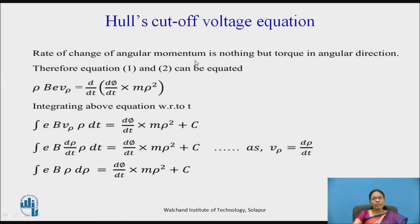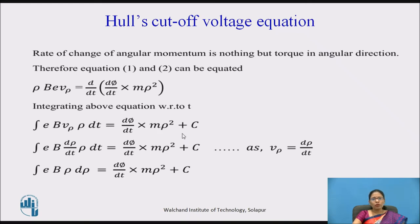The rate of change of angular momentum equals the torque in the angular direction. Equating equation 1 and equation 2: rho·BEV_rho = d/dt(d phi/dt · m·rho²). Integrating both sides with respect to time — since V_rho = d rho/dt, the dt terms cancel — and we obtain: EB∫rho d_rho = d phi/dt · m·rho² + C, where C is the constant of integration.